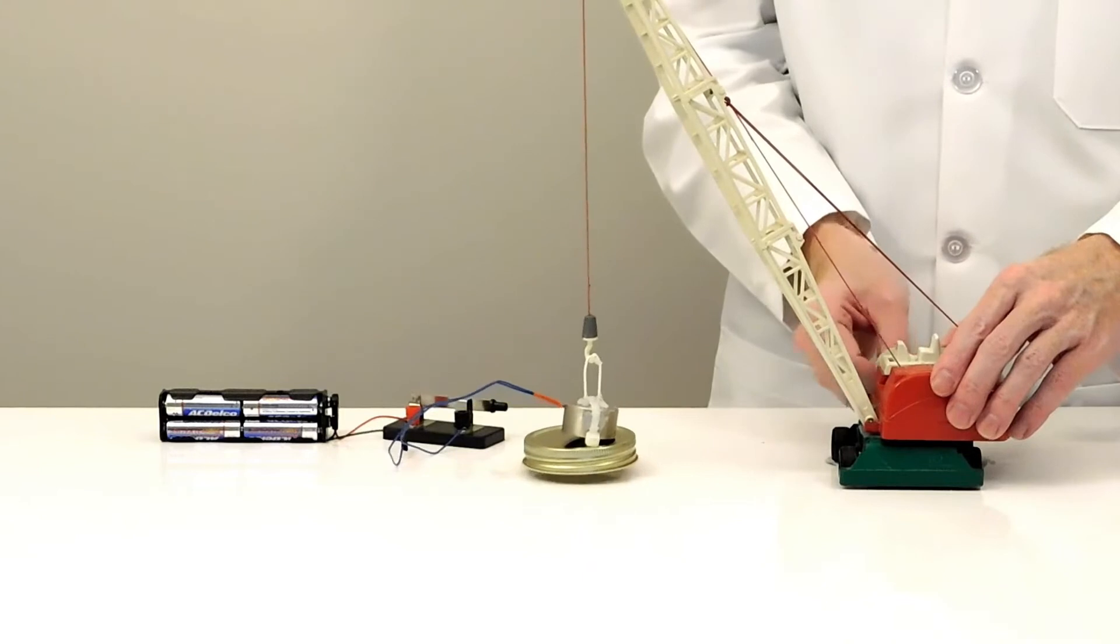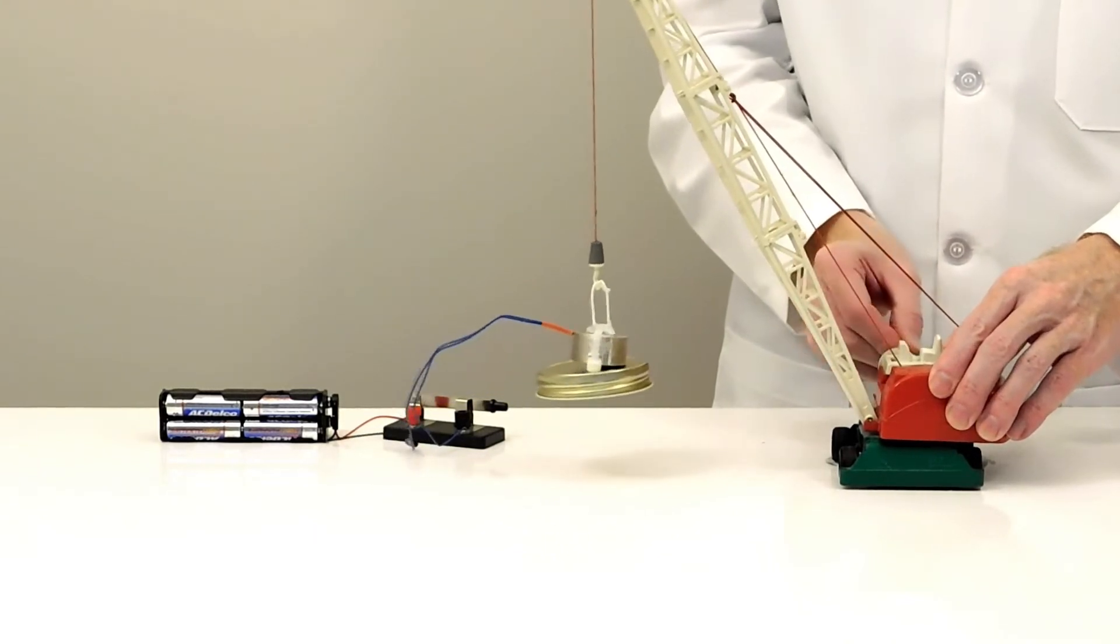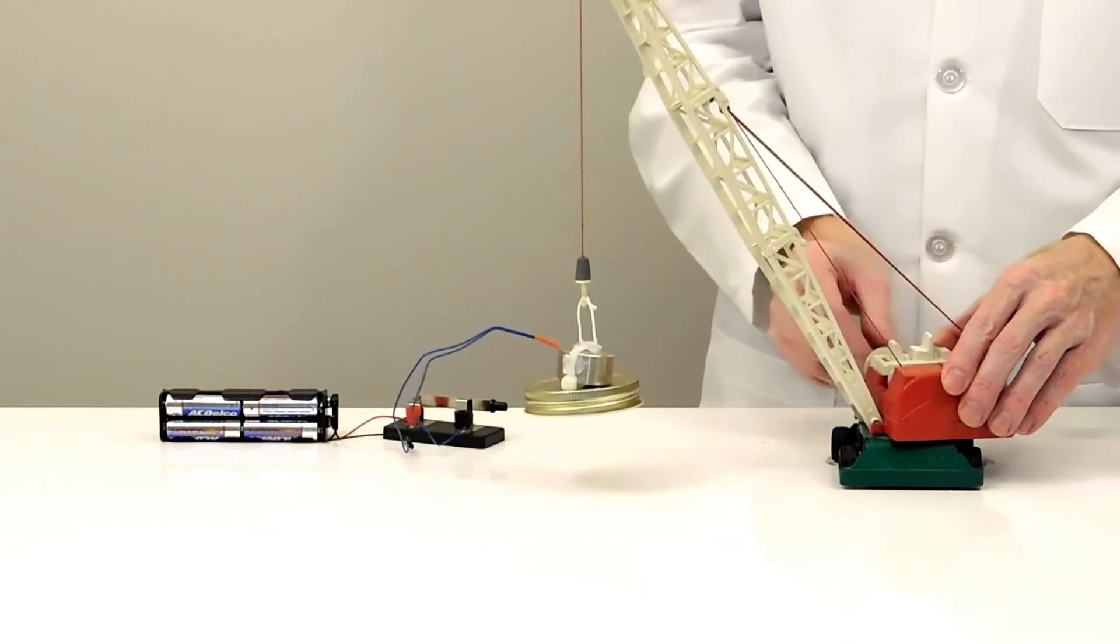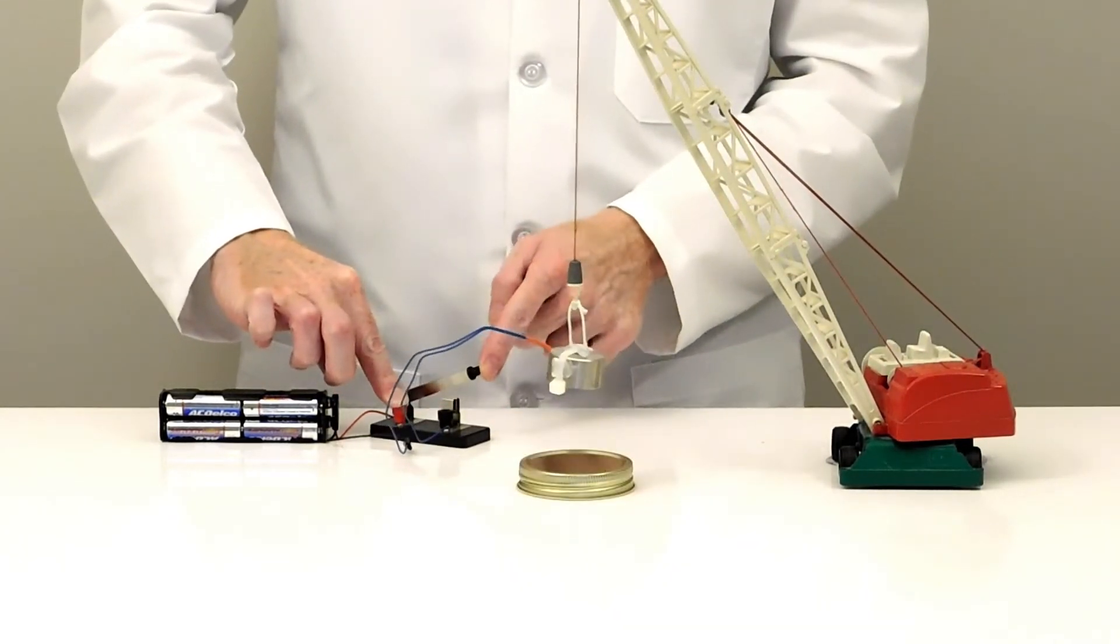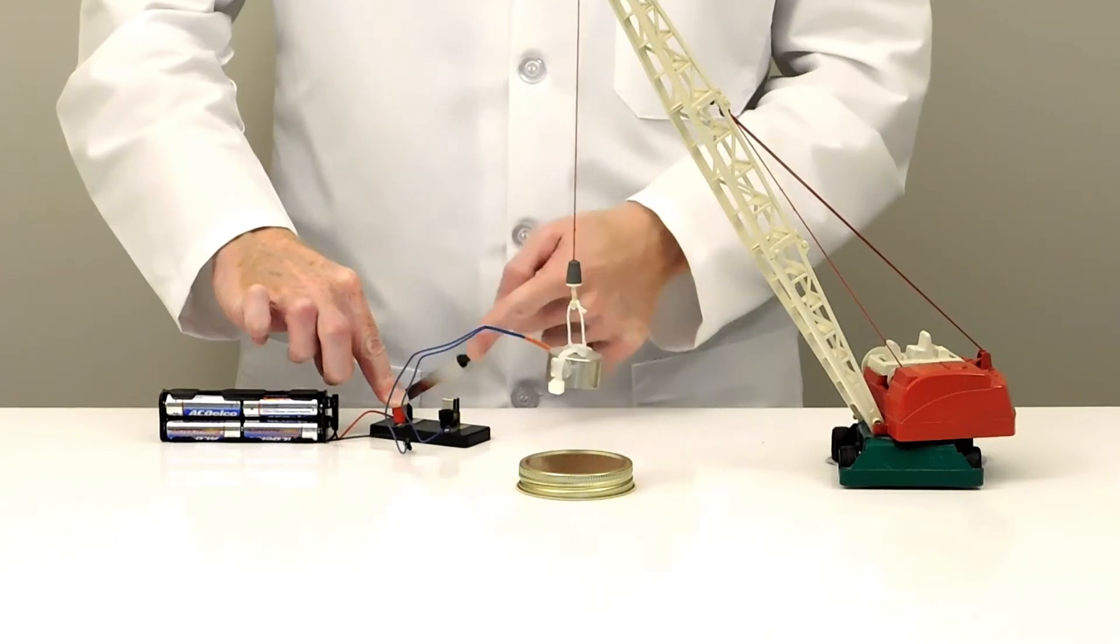When the switch is activated, the magnet turns on and it will lift up metals that can be attracted by magnets. When the switch is deactivated, the magnet turns off and the metal will drop.